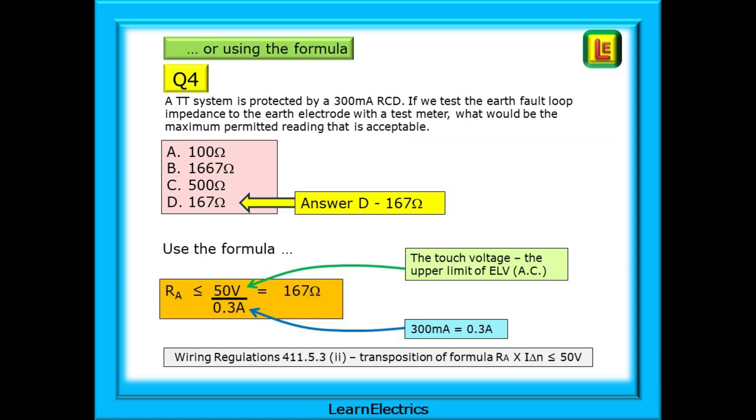Or we can use the formula found in the Wiring Regs book in Regulation 411.5.3 Part 2. An easy transposition of this formula will make the resistance the subject. Look at the formula in the orange box. It is just Ohm's law. Resistance equals voltage divided by current.